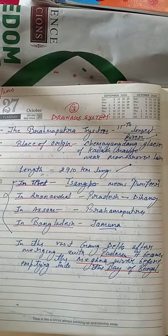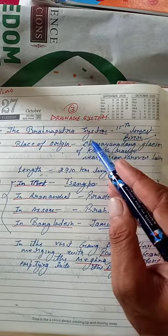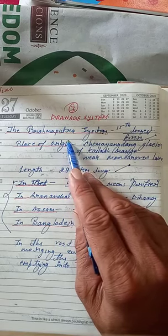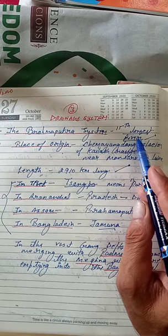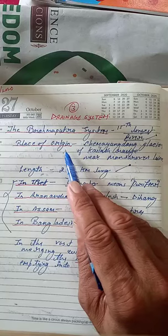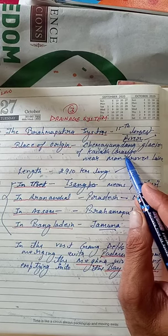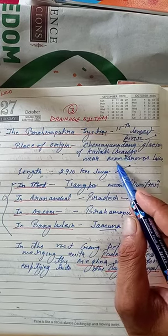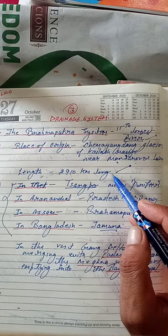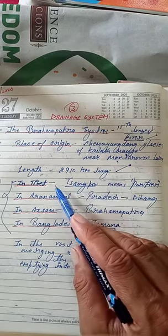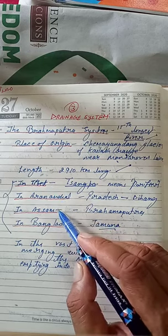Good morning everyone. Today in this session of Chapter 3, Drainage System, we will discuss the Brahmaputra system. Brahmaputra is the 15th longest river, making it one of the largest rivers of the world. Its place of origin is in the Chemayungdung glacier of the Kailas range, near Lake Mansarovar. It is 2910 km long and passes through China, Tibet, India — from Assam — as well as Bangladesh.